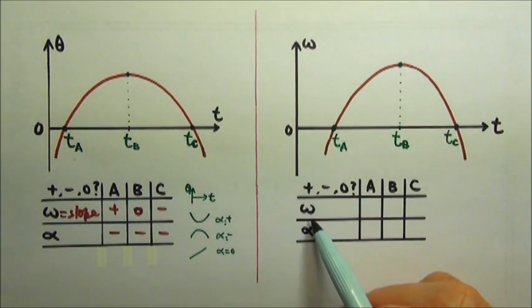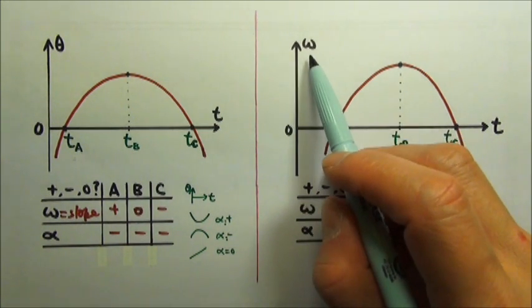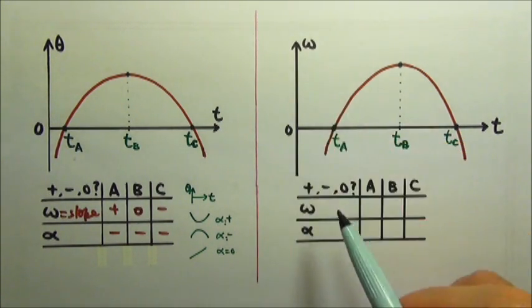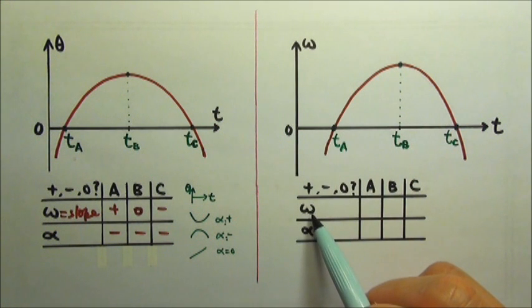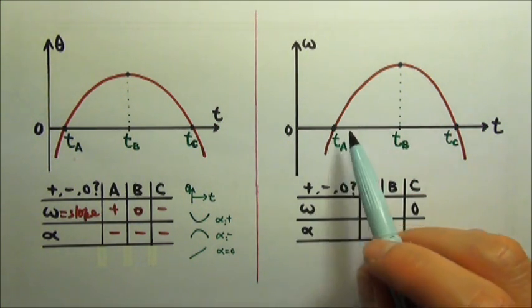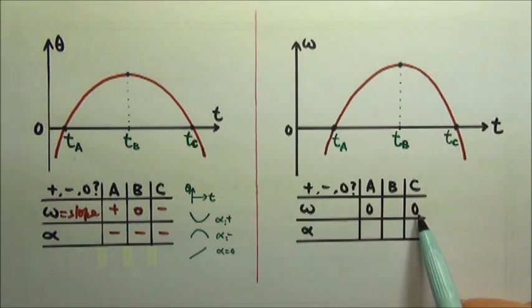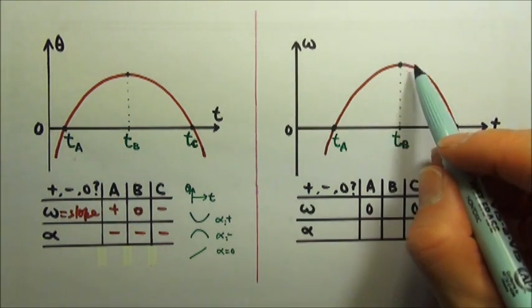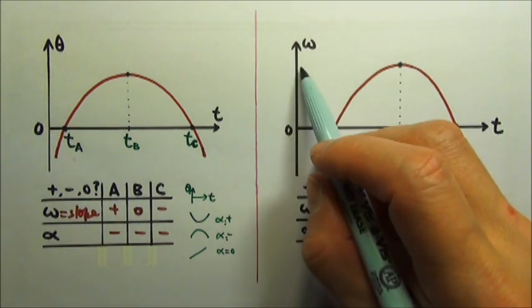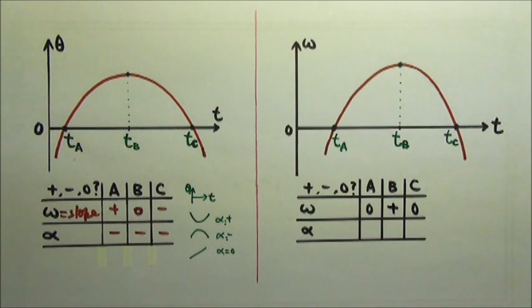For the angular velocity, it's given directly in the graph, so we just read off the graph. For both moments a and c, the angular velocity is zero. For b, the angular velocity is a positive value.